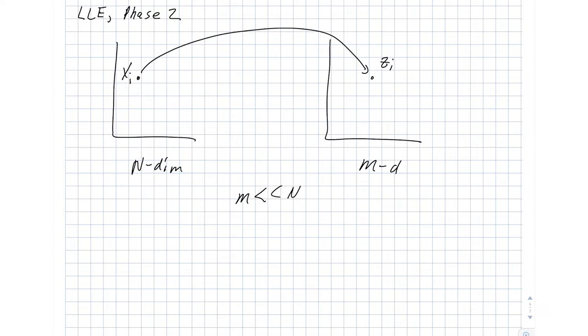In the previous phase, we constructed these local models where we estimated the location of XI in terms of its neighbors. And we're going to do the same on the ZI side. So we have a ZI hat, which is a weighted sum of the local neighbors. So NJ is that neighborhood, and we have ZJ here and WIJ.